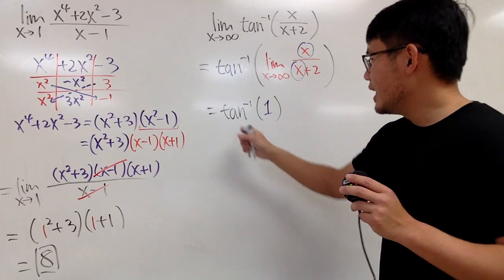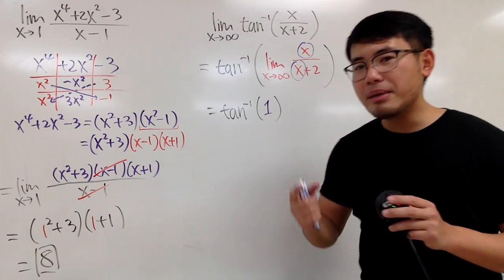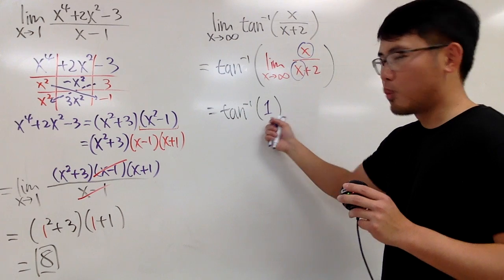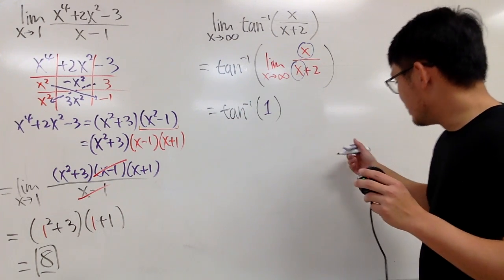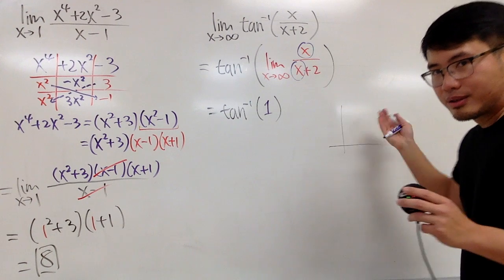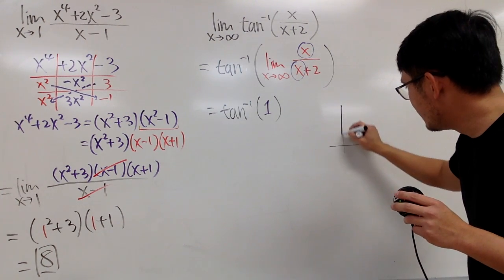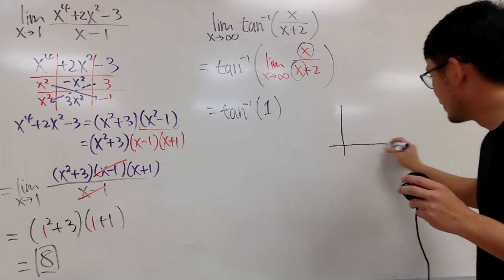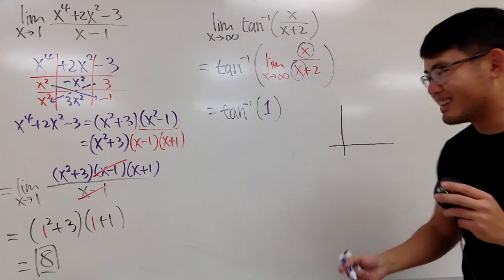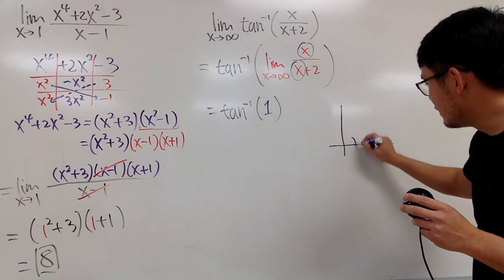And you also have to know, inverse tangent of one is equal to what? That means you have to ask yourself, tangent of what angle will give you one? Well, let me just draw a little picture for you guys, because I said this is for my Calc 1 students, and maybe some of you guys haven't done math. Maybe you guys have too much fun during your winter break.